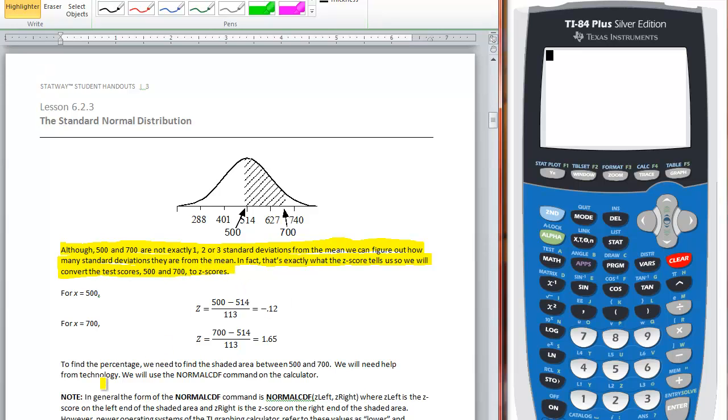We convert them so that basically we can use the normal CDF command in the calculator. That's the point there. Now I'm not going to go through the calculation, but you plug in 500 for the value and you get out negative 0.12 for the z-score. You plug in 700 for the value and you get out 1.65 for the value.